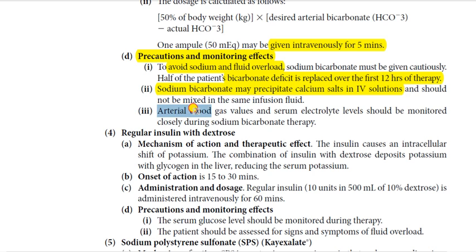Additionally, monitor arterial blood gases. Arterial blood gas values and serum electrolyte levels should be monitored closely during sodium bicarbonate therapy. As therapy proceeds, pH will start to rise and sodium, carbon dioxide, and oxygen levels will gradually normalize. Monitor electrolyte levels because as pH increases, potassium will shift into cells — managing hyperkalemia — and sodium that had shifted into cells causing hyponatremia will start to compensate as well.